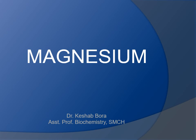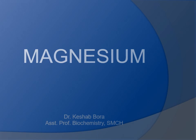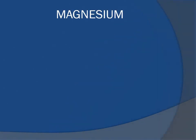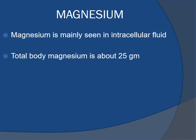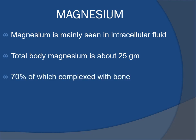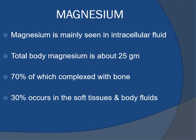Hello students, today I am going to talk about the macromineral magnesium. Magnesium is the fourth most abundant cation in the body and the second most prevalent intracellular cation after potassium. Total body magnesium is about 25 grams; 70 percent of which is complexed with bone and 30 percent occurs in the soft tissues and body fluids.